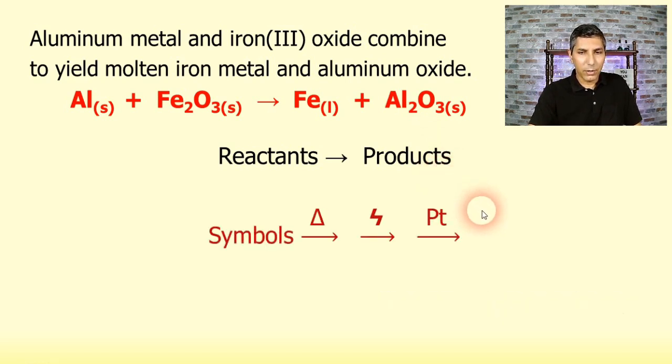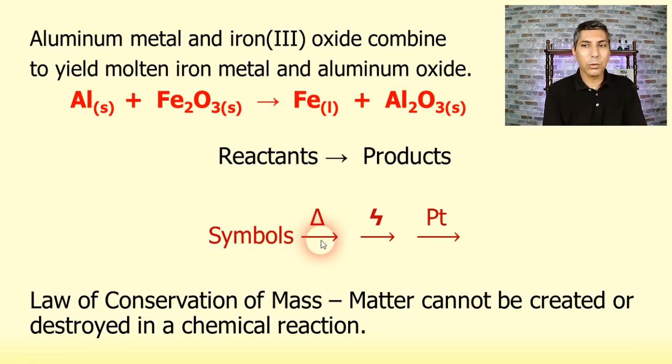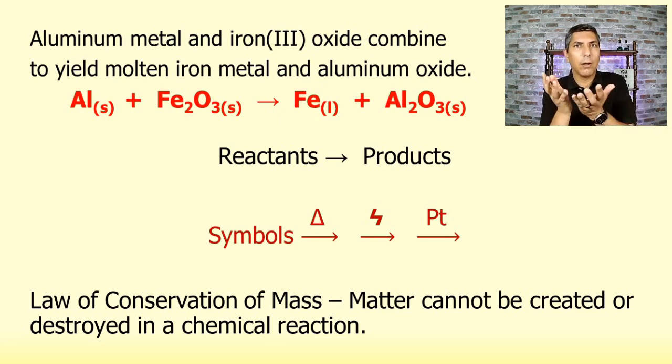Now be aware that there are some other symbols that we can put into this here. And if you ever see a triangle written over the arrow, that means that heat has to be added in order to make the reaction work. And there are a lot of reactions like that. For example, we mentioned baking a cake. If you mix all the ingredients together and then just leave the cake mix out on the table all day, you're not going to have a cake. You're just going to have a mass of batter that eventually gets dried out and gross. You have to put it in the oven and that heat causes the chemical reaction. And then you have a cake at the end of the process. So some reactions require that heat. That's what the triangle represents.